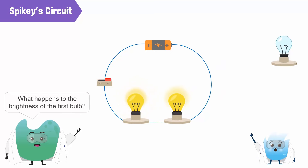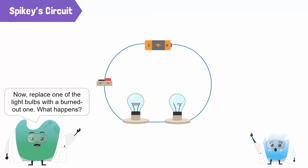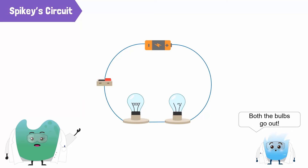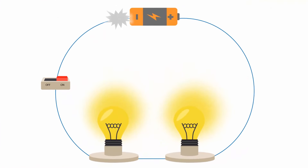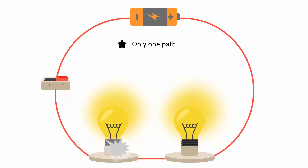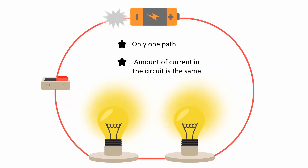What happens to the brightness of the first bulb? Whoa, it's dimmer. Exactly. Now replace one of the light bulbs with a burned out one. What happens? Both the bulbs go out. This is a series circuit. If all the electrical components are connected one after another in a single loop, then it is a series circuit. In a series circuit, there is only one path for the current to flow, and the amount of current that flows through each bulb is the same.